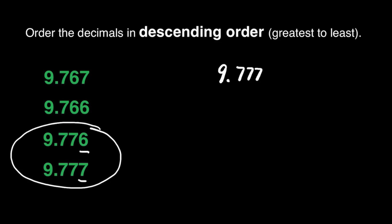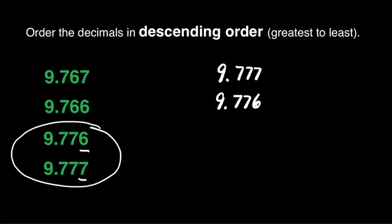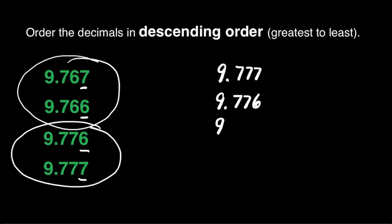That will be followed by 9 and 776 thousandths. Now we will choose between the remaining two. We compare the numbers in their thousandths place — is it 7 or 6? We will go for 7. So the next one is 9 and 767 thousandths, and the last will be 9 and 766 thousandths.